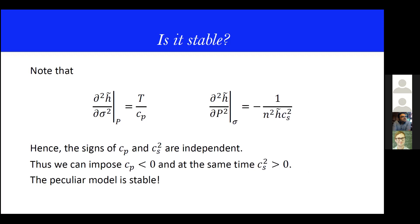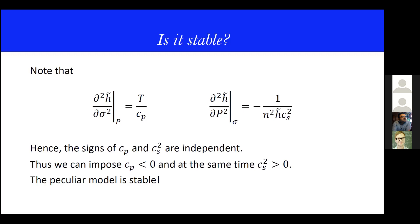So if I do this, I'm super happy — I have discovered that specific heats can be negative without any problem. Of course, this is not the end of the story, because you can check — you can make the experiment. There is no way to generalize this model, for example to Israel and Stewart. In Israel and Stewart, you will find in equation 95 that necessarily for Israel and Stewart to be stable, you need to have a positive specific heat. But then you can say: okay, let's go to Newtonian physics. And you discover another problem: anti-diffusion.